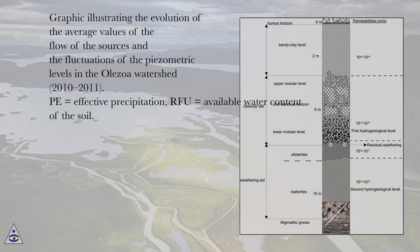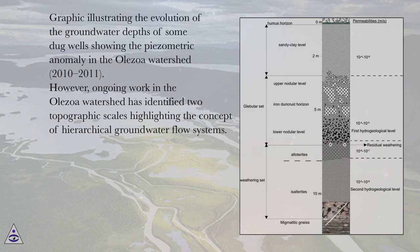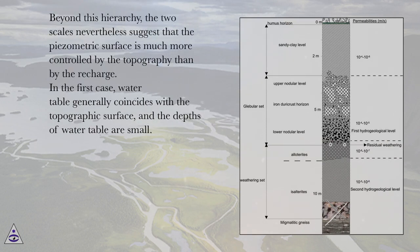A graphic illustrates the evolution of the average values of the flow of springs and the fluctuations of the piezometric levels in the Olezoa watershed, 2010–2011, where P equals effective precipitation and RFU equals available water content of the soil. Another graphic illustrates the evolution of groundwater depths of some dug wells showing a piezometric anomaly in the Olezoa watershed, 2010–2011. Ongoing work in the Olezoa watershed has identified two topographic scales highlighting the concept of hierarchical groundwater flow systems. Beyond this hierarchy, both scales suggest that the piezometric surface is much more controlled by topography than by recharge.